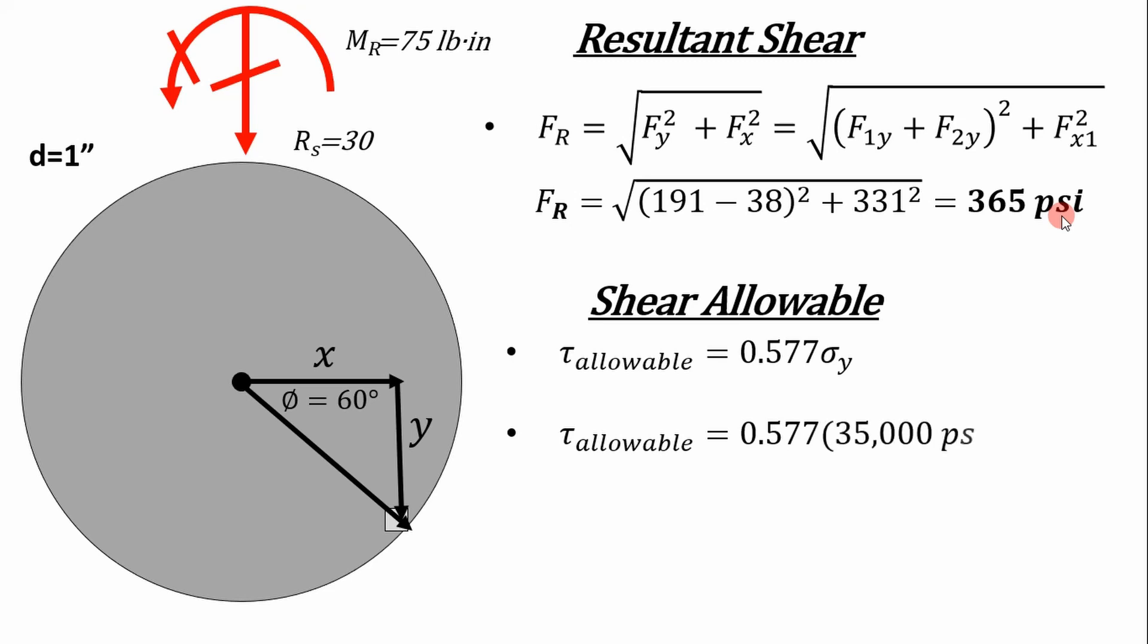And because this is just a shear case, this is going to be the result. If you had, say, a tension and compressive stress, this is not valid. This just can be derived from Mises stress, which I may cover in a later video. But let's say the yield stress of this material is 35,000 psi. Then your shear allowable is just going to be the product of those two numbers, which is 20,195 psi.